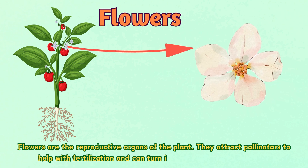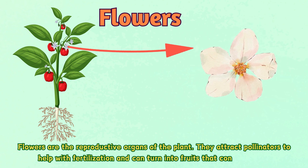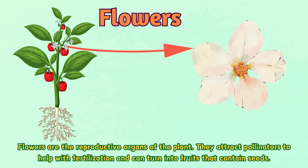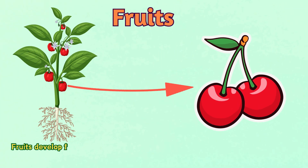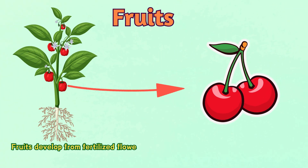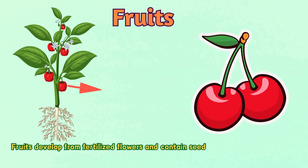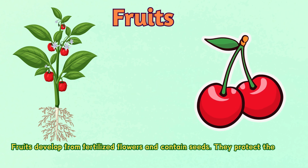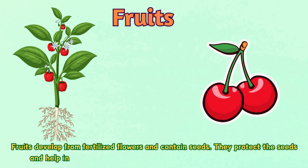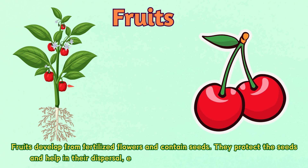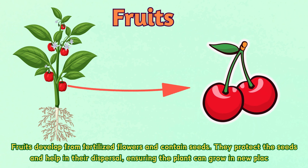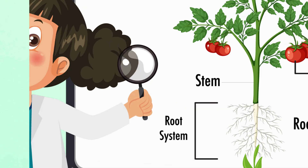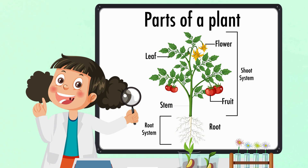Flowers can turn into fruits that contain seeds. Number five: fruits. Fruits develop from fertilized flowers and contain seeds. They protect the seeds and help in their dispersal, ensuring the plant can grow in new places.